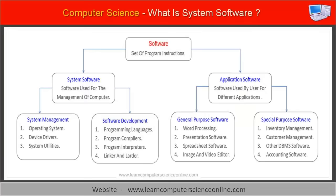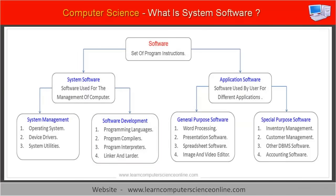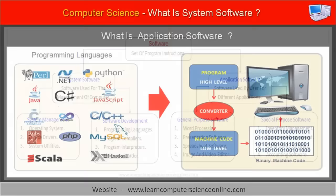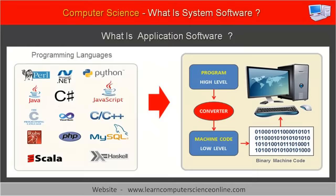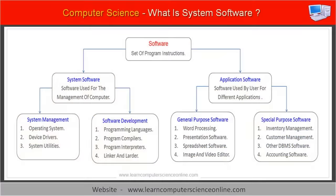The second type of system software is used by programmers and software developers for software development. It includes programming languages for writing program code, and program compilers and interpreters that translate high-level program code into binary low-level machine code.